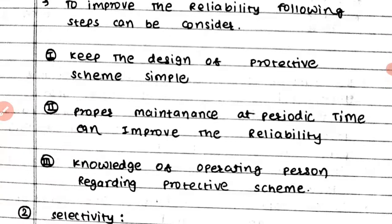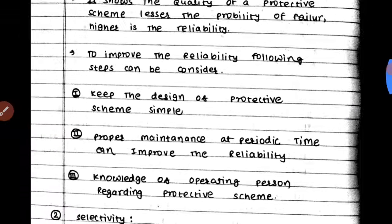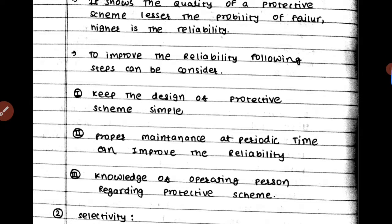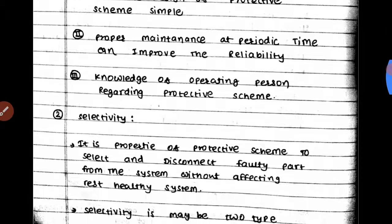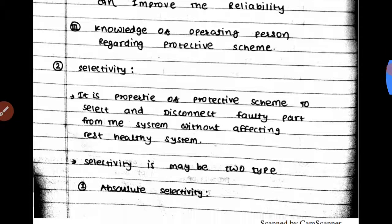As we increase the maintenance cycle, the reliability of the protective scheme increases. Third, knowledge of the operating person regarding the protective scheme — the higher the knowledge, the more quickly problems can be solved, giving high reliability. These are the three steps by which we can improve the reliability of our system.